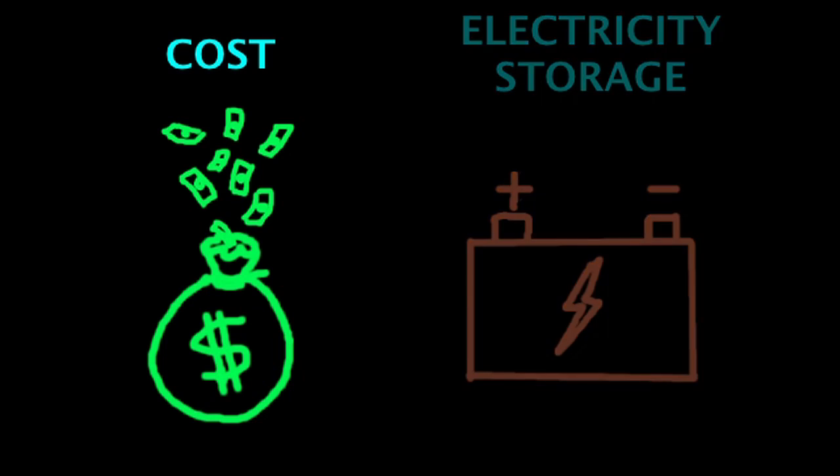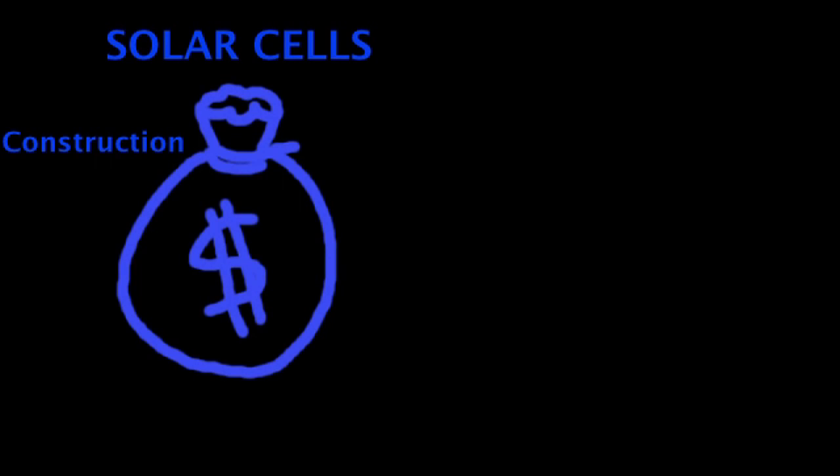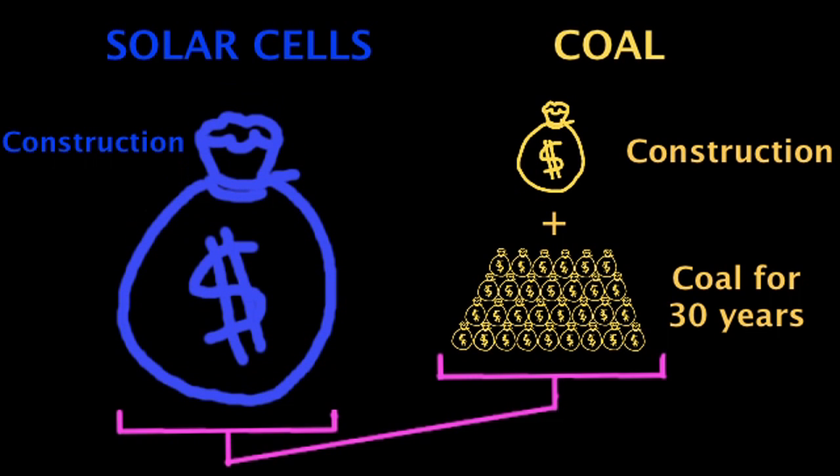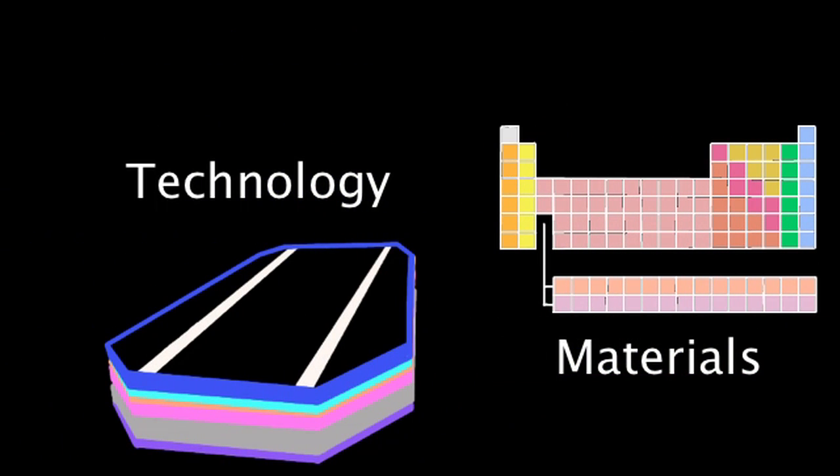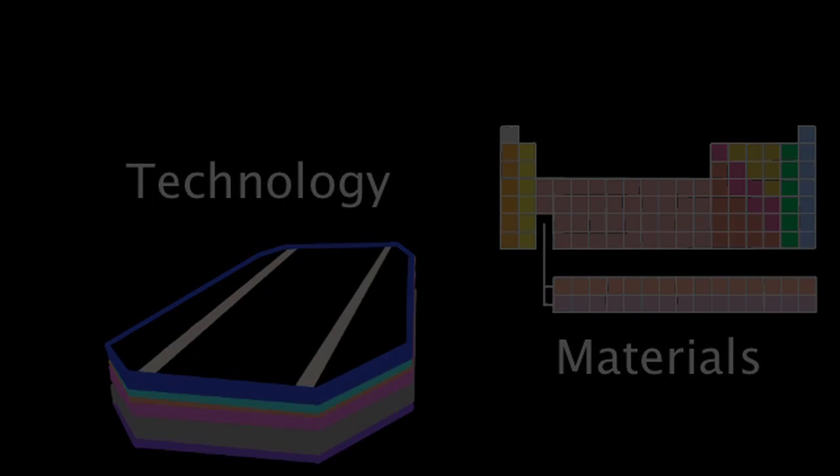Wait, you said cost? Don't you just get energy from the sun for free? That's correct. But the construction of solar cells is so expensive that even if we use them during 30 years, it would be cheaper to get that electricity from coal. However, improvements in technology and in materials will probably make solar cells more affordable in the future.